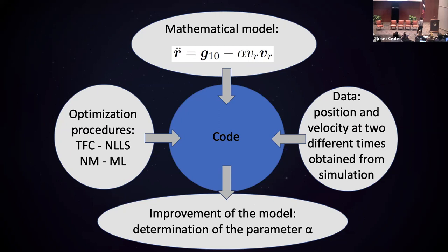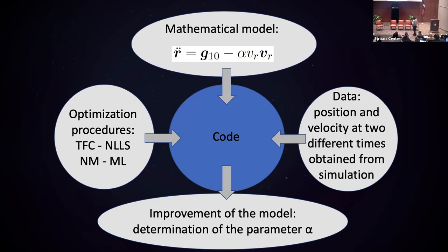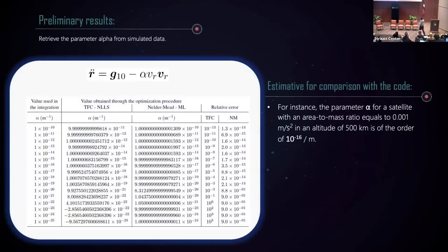We presented in the paper a first result for the mathematical model, where one term is given by the potential of the Earth up to degree and order 10. We obtained data from simulation — this is not a real case, we used simulated observational data. We used the position and velocity at two different times and gave it to the code. The code was able to recover the parameter alpha, even when given a wrong initial guess, improving it to determine the correct value.